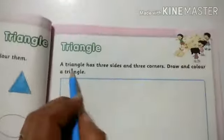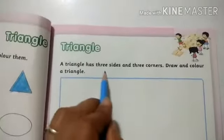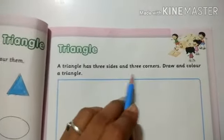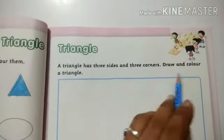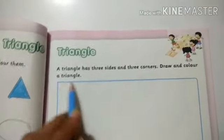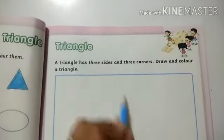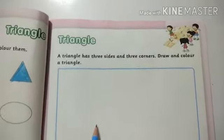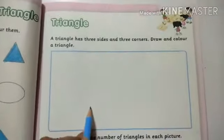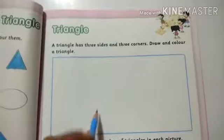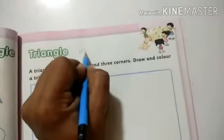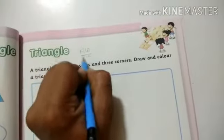Now next page, page number 75. A triangle has 3 sides and 3 corners. Draw and color a triangle. This is the homework — draw two triangles.